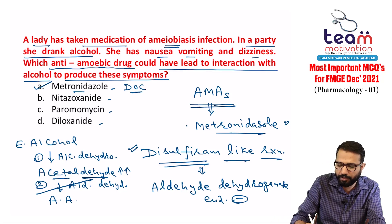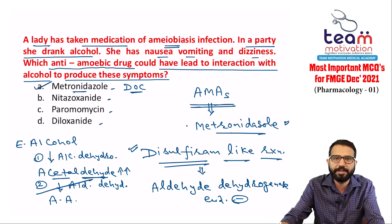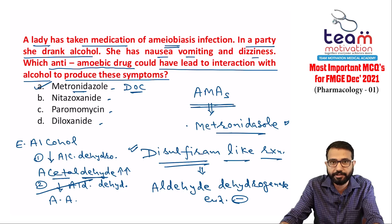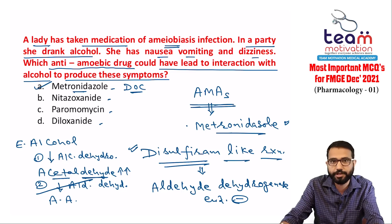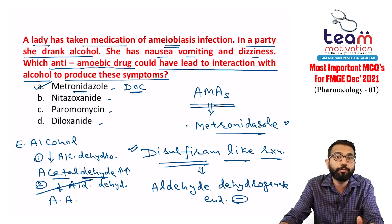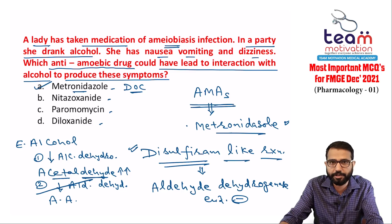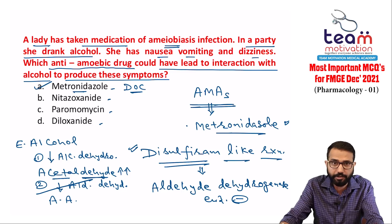Metronidazole is the drug of choice for amoebiasis, Giardiasis, trichomoniasis, H. pylori infection, anaerobic infections, and is also used for helminth infestations. It is an important broad-spectrum drug used for both protozoa and bacteria. However, in alcoholic patients it can cause disulfiram-like reaction, while the most common side effect is nausea and vomiting.